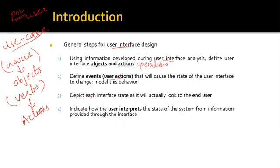The next step depicts each interface state as it will actually look to the end user — things that are going to be visible to the end user, like the layout. Then, indicate how the user interprets the state of the system from information provided through the interface. Whenever you are working on your system you sometimes get pop-up boxes or specific messages, and you identify how the user will understand what that specific message means.